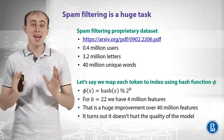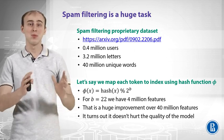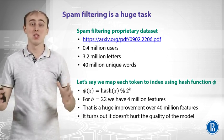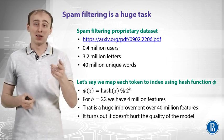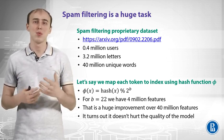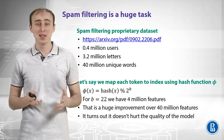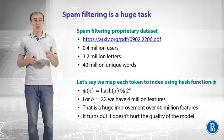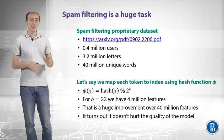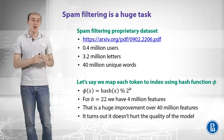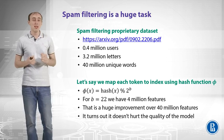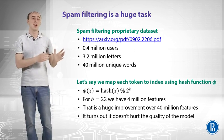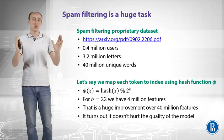Let's take the spam filtering task. As you might guess, that is a huge task because even a medium mail server handles a lot of emails, and if you have millions of users, then you have a terabyte of text to analyze. There is a paper on arXiv introducing a proprietary data set for spam filtering with half a million users, three million letters, and 40 million unique words. If we map each token to an index using a hash function phi, taking its hash value modulo 2 to the B, then for B equal to 22 we have 4 million features — a huge improvement over 40 million features.